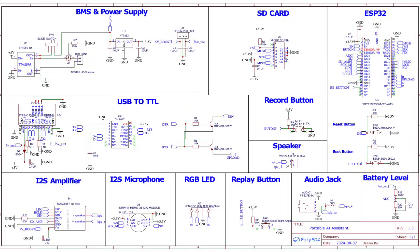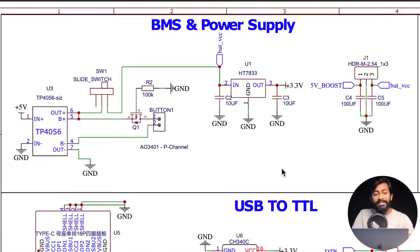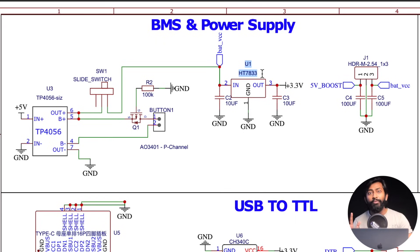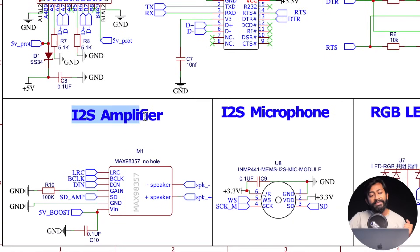Here I have properly arranged all the different components based on their use cases in the schematic, starting with the BMS or battery management system and the power supply. We used the TP4056 module as a battery charging module. Then we used the HT7833 IC as a voltage regulator IC. Previously we used HT7333, but this HT7833 has five times more output current capacity, ensuring our module gets enough current for all internet-connected activities. We are also using a booster which converts 3.3V to 5V, which is given to the I2S amplifier.